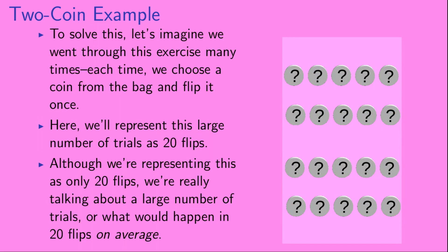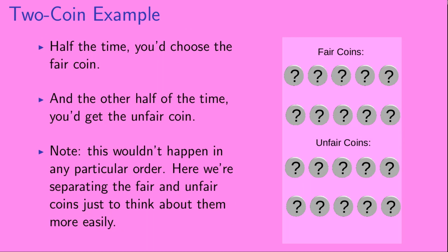In order to solve this, let's imagine that we went through this exercise many times. Each time, we choose a coin from the bag and flip it exactly once. We're going to represent this large number of trials as 20 flips — what we're really talking about is what would happen in a large number of trials, or what would happen in 20 flips on average. So half of the time you'd choose the fair coin, and the other half you'd choose the unfair coin. Out of our 20 flips, we've labeled the first 10 as fair coins and the last 10 as unfair coins.